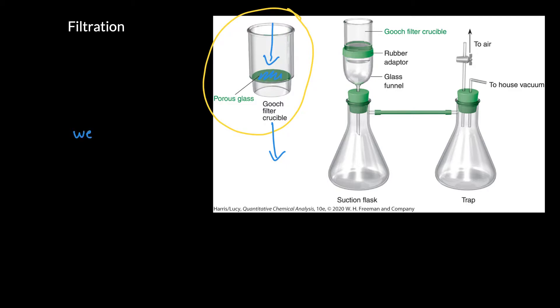If we weigh it empty and dry, and then weigh it full of precipitate, we can subtract the two masses from each other to find the mass of the precipitate itself.